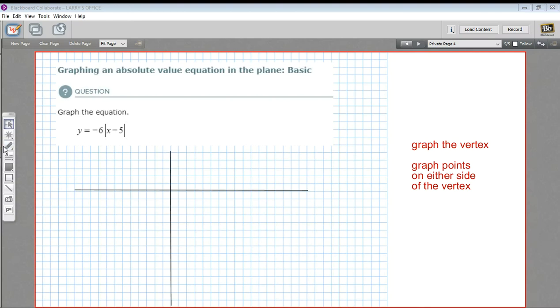In this problem, we're being asked to graph an absolute value equation. In this case, it's y equals negative 6 times the absolute value of x minus 5.